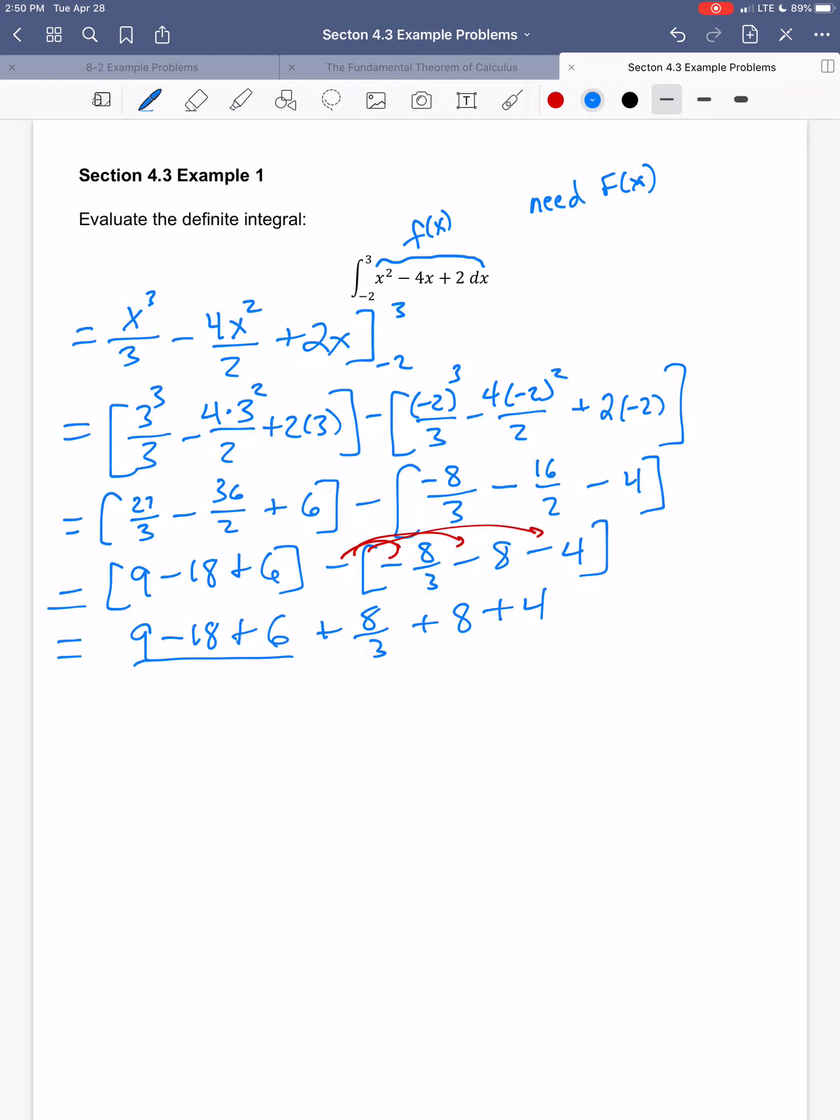So if I put all this stuff together, 9 minus 18 is negative 9, negative 9 plus 6 is negative 3, negative 3 plus 8 is 5, 5 plus 4 is 9.